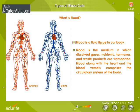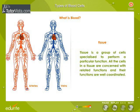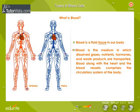Blood is a fluid tissue in our body. It is the medium in which dissolved gases, nutrients, hormones and waste products are transported. Blood, along with the heart and the blood vessels, comprises the circulatory system of the body. As a tissue, blood is formed of cells and other components. Let us discuss some more details about the cellular components of blood.